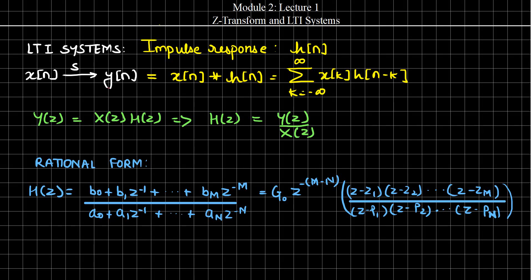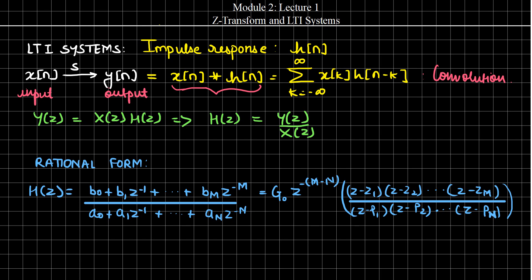To begin with, an LTI system or a linear and time-invariant system is characterized by its impulse response H. Now suppose X is the input to the system and Y is the output, then its output can be calculated using the convolution sum, given as the summation with K running from minus infinity to infinity of X convolved with H, where the star denotes the convolution operator.